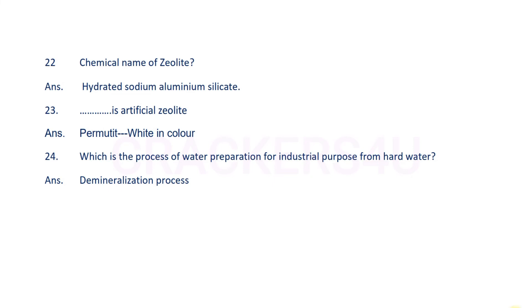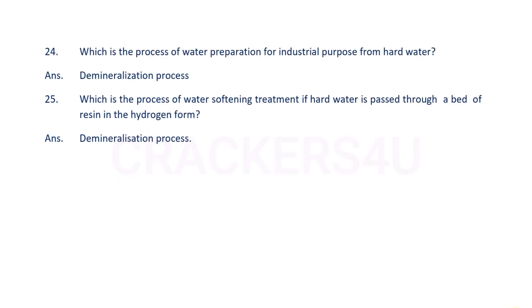Question number 24: Which is the process of water preparation for industrial purposes from hard water? Answer: Demineralization process. Which process of water softening treatment involves passing hard water through a bed of resin in the hydrogen form? Answer: Demineralization process.